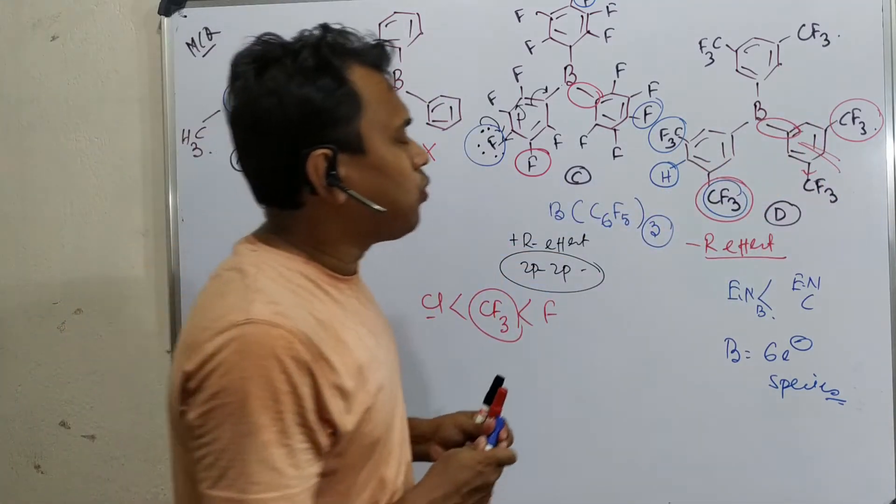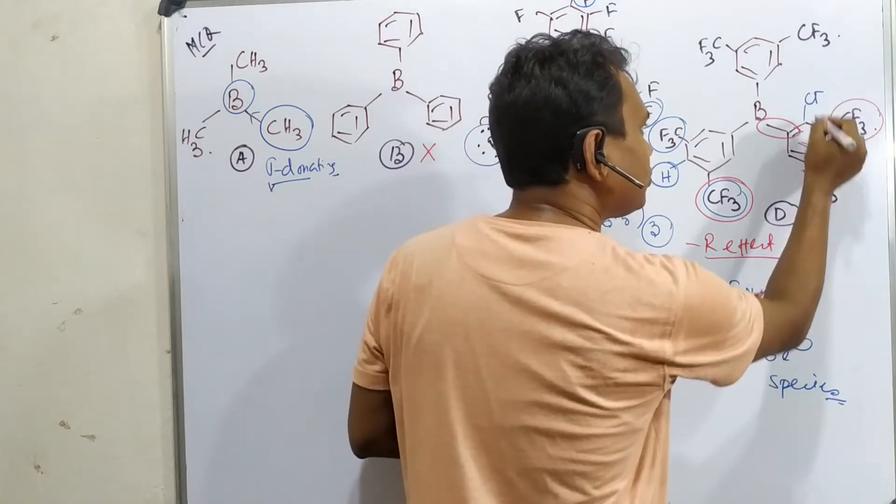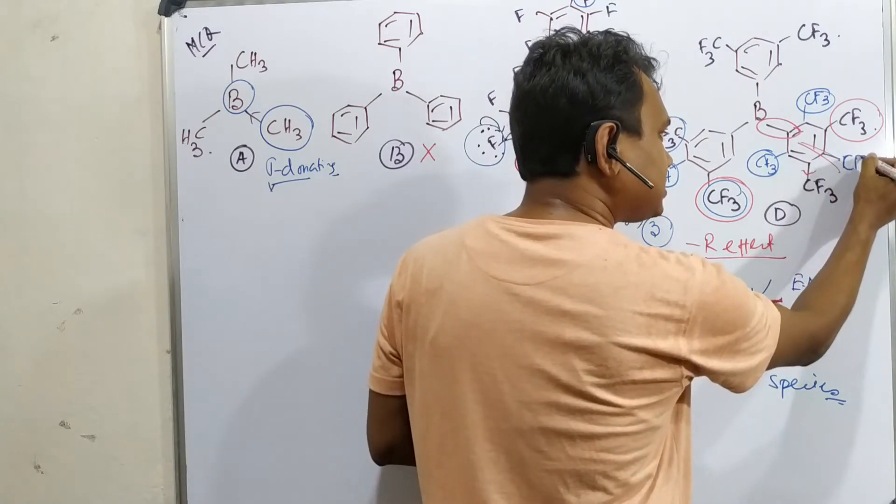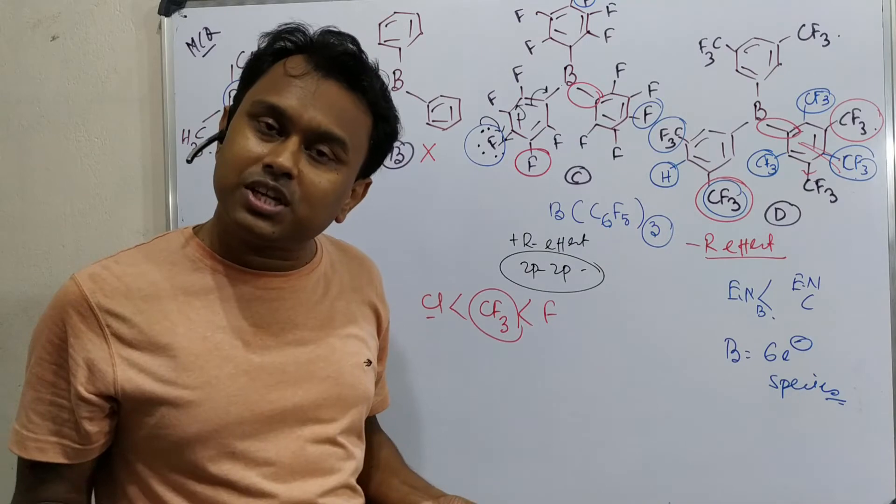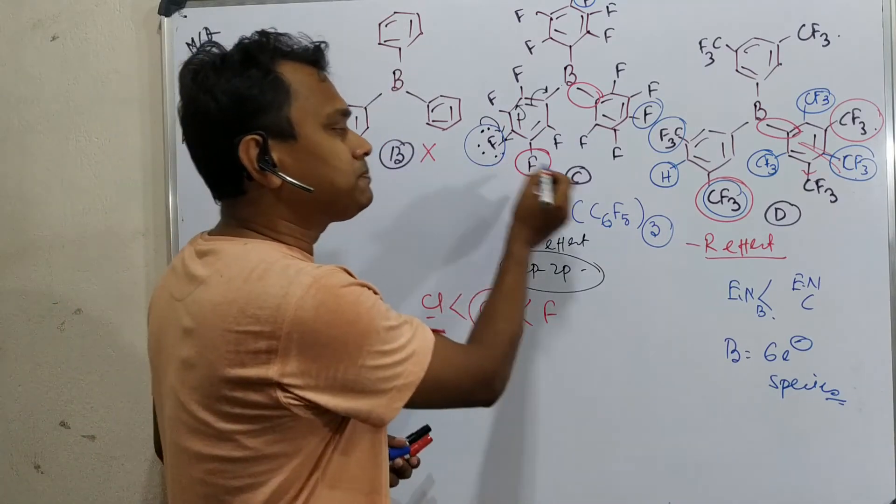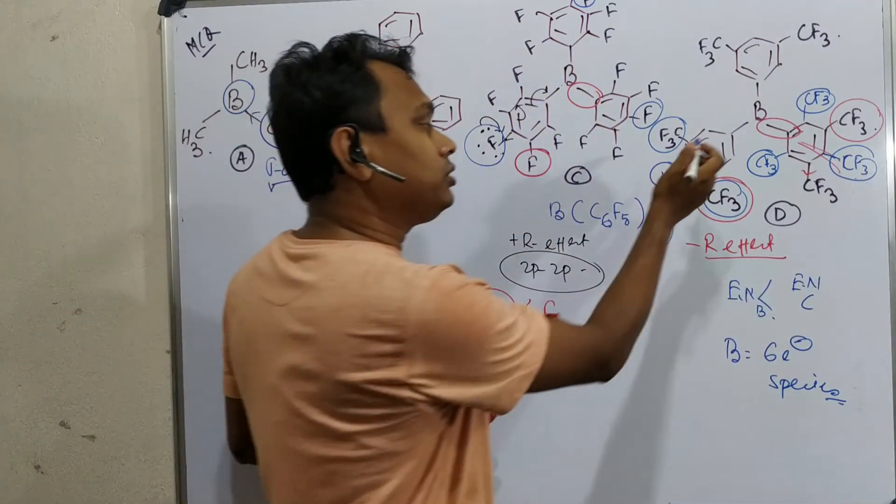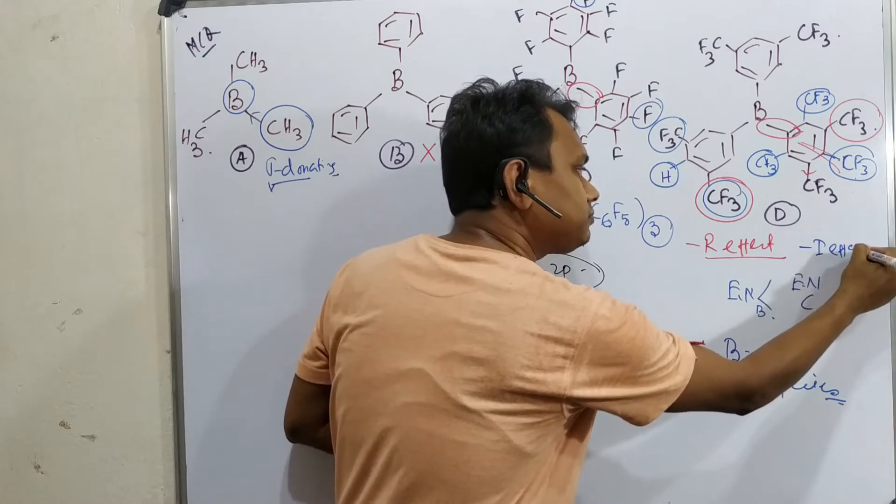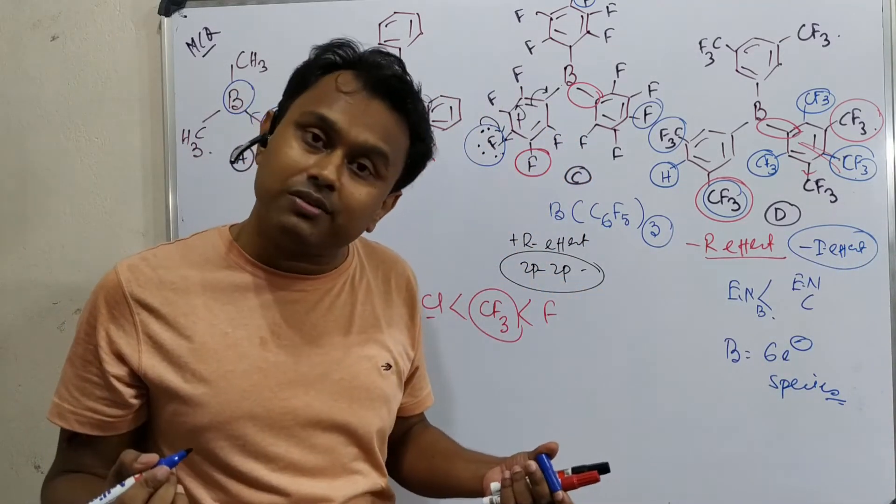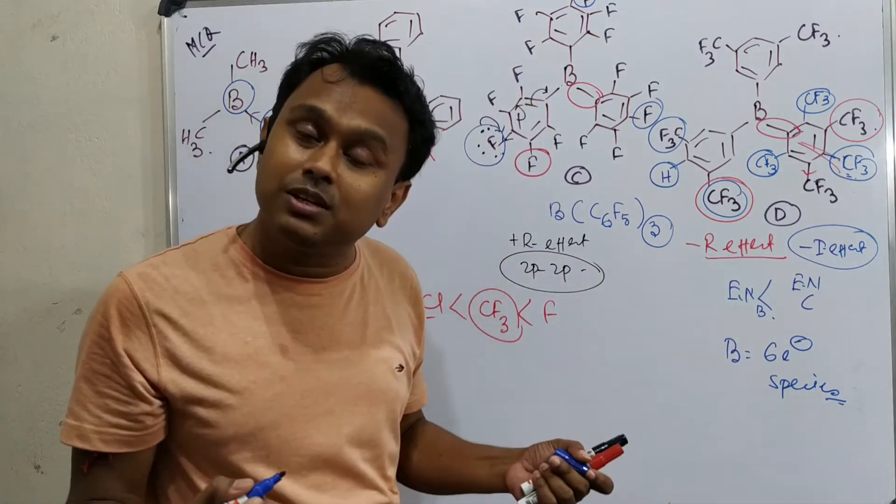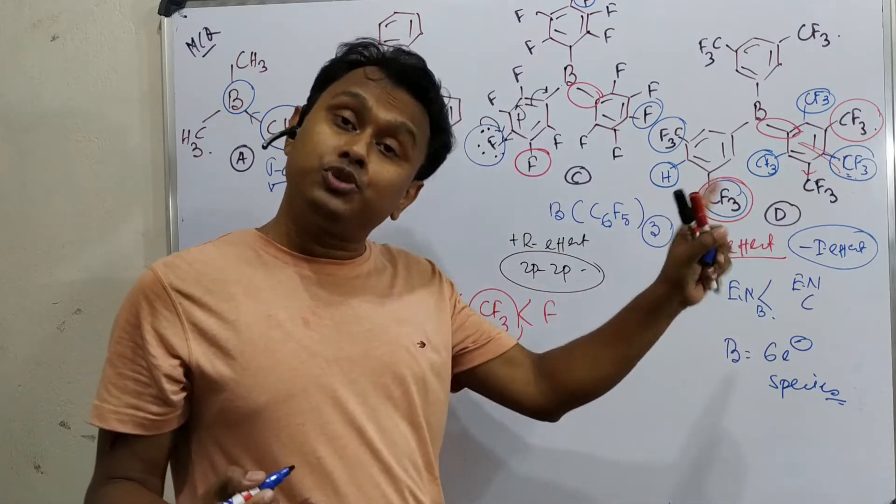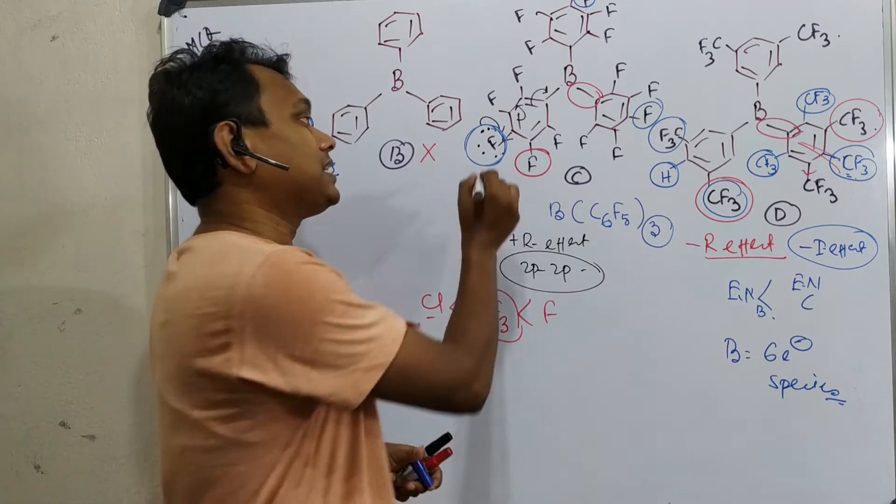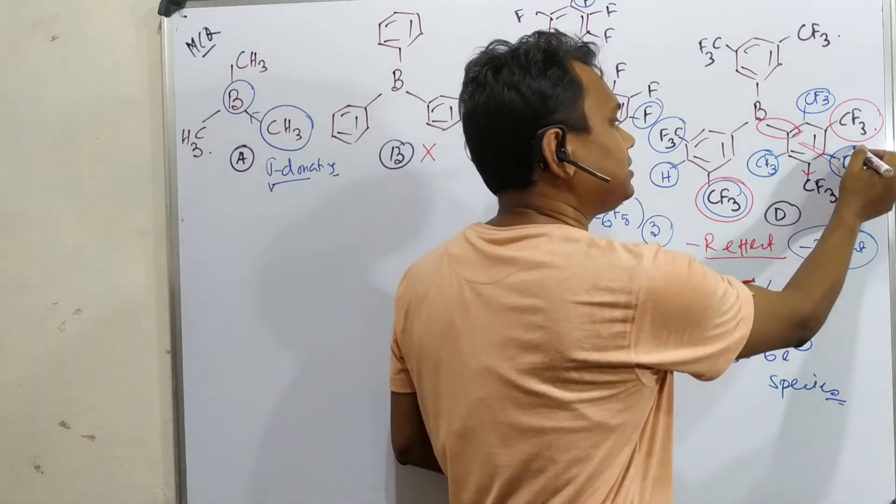Now the question you can ask: why not other positions? Instead of these two meta-CF3, there are two equivalent ortho positions also, here and here. Why not those? Let's discuss. Why not a single CF3? Because a single CF3 has less withdrawing efficiency. Second, remember this para position - how far you go in distance from this boron center, the sigma withdrawing effect will reduce. We know that increasing the distance reduces minus I effect. So that's why minus I will be reduced because it is acting through minus I and only one group. So overall contribution is less. If you look at para-fluorine in option C, this fluorine is four positions away, so minus I effect's contribution is very less whereas plus R contributes.